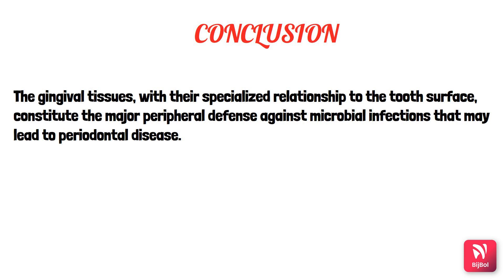In conclusion, gingival tissues with their specialized relationship to the tooth surface constitute the major peripheral defense against microbial infections that may lead to periodontal disease. The defense mechanisms include: the gingival epithelium (active role), gingival crevicular fluid, leukocytes in the dento-gingival area, and saliva — all of which contain leukocytes, desquamated epithelial cells, and enzymes that defend the host against bacteria.